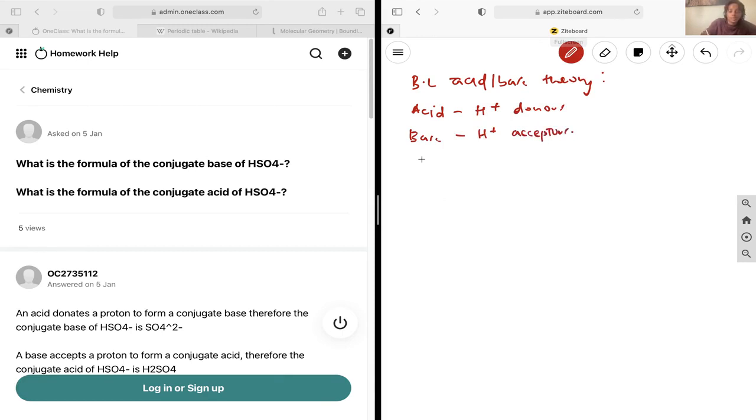If we write out an equation for that, that means HA plus B- is going to give us A- plus HB, all of this in aqueous solution. If you go ahead and label this, this would be our acid and its conjugate base, this would be our base and its conjugate acid.